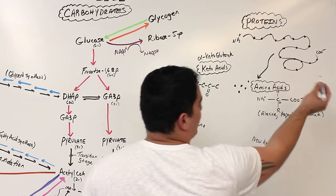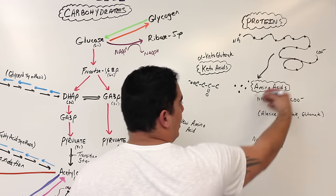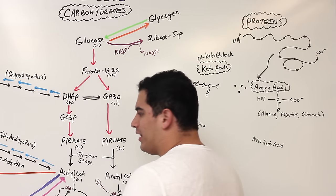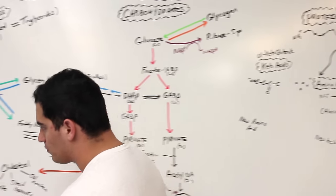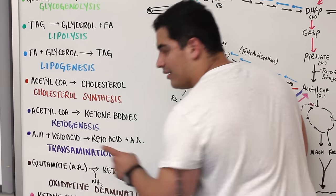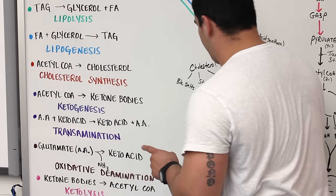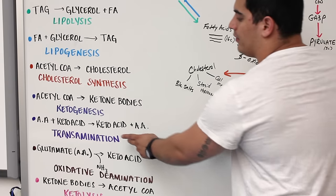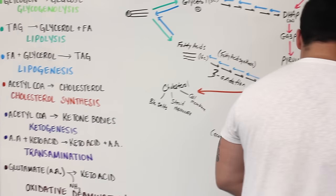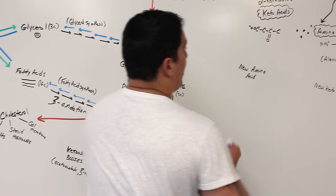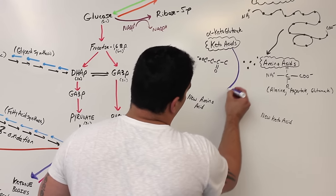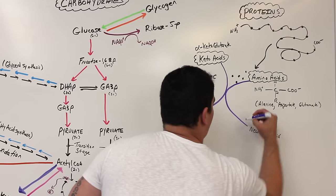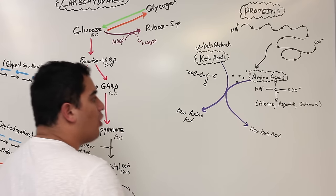So if I take an amino acid, react it with a keto acid, and then make a new keto acid and a new amino acid — what is that called? Transamination. So these two react: the keto acid gets converted into a new amino acid, and the amino acid gets converted into a new keto acid. This is called transamination.